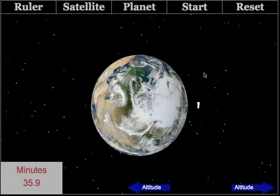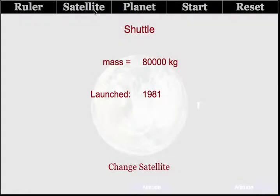This program was designed for students to explore properties of orbital motion. In this example, I have a space shuttle-like satellite. I can change that by clicking on the satellite button and changing it to something that looks like Sputnik.